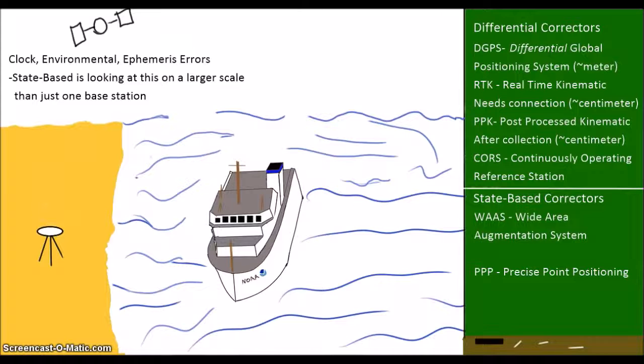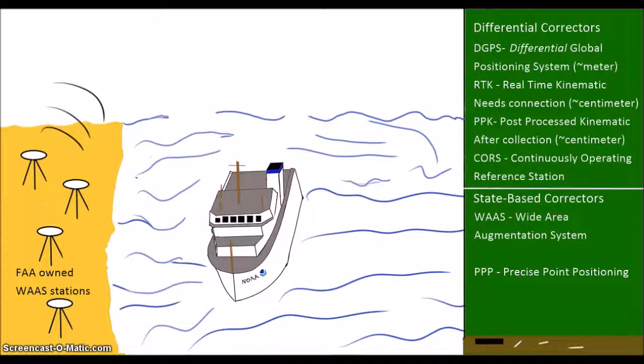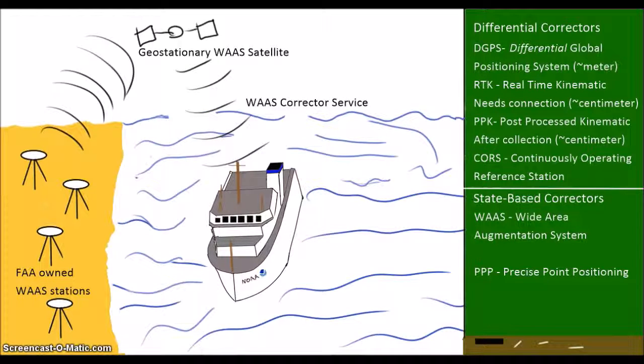WAAS, or the Wide Area Augmentation System, is a real-time state-based system run by the FAA. This system also uses a network of ground GPS stations. But rather than trying to figure out differential corrections to apply to the data, the WAAS system attempts to model, in real-time, actual satellite positions, clock errors, and atmospheric effects. This modeled information is broadcasted to the rovers via geostationary satellites.